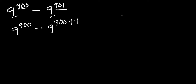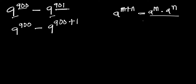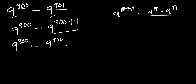We make use of this known identity: if you have a to the power of m plus n, this equals a to the power of m times a to the power of n. Applying this identity, we get 9 to the power of 900 minus 9 to the power of 900 times 9 to the power of 1.